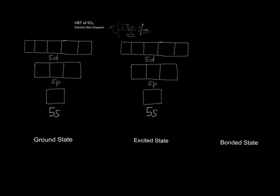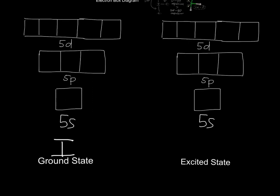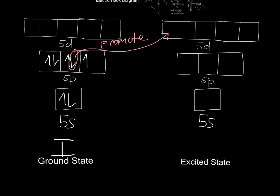We first start with iodine's ground state. Iodine has seven valence electrons. However, in order to get three bonds with chlorine, as it is iodine trichloride, we cannot use this configuration as there is only one unpaired electron. With this being said, we would have to promote one of the electrons in the 5p orbital to the 5d orbital. We do this by adding energy. By doing so, we would end up with three unpaired electrons that we can bond with chlorine.